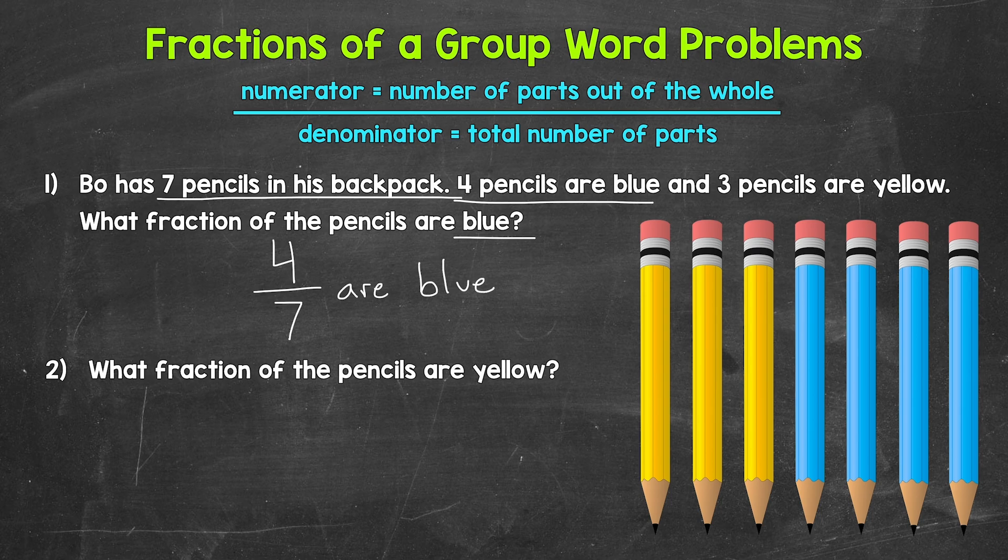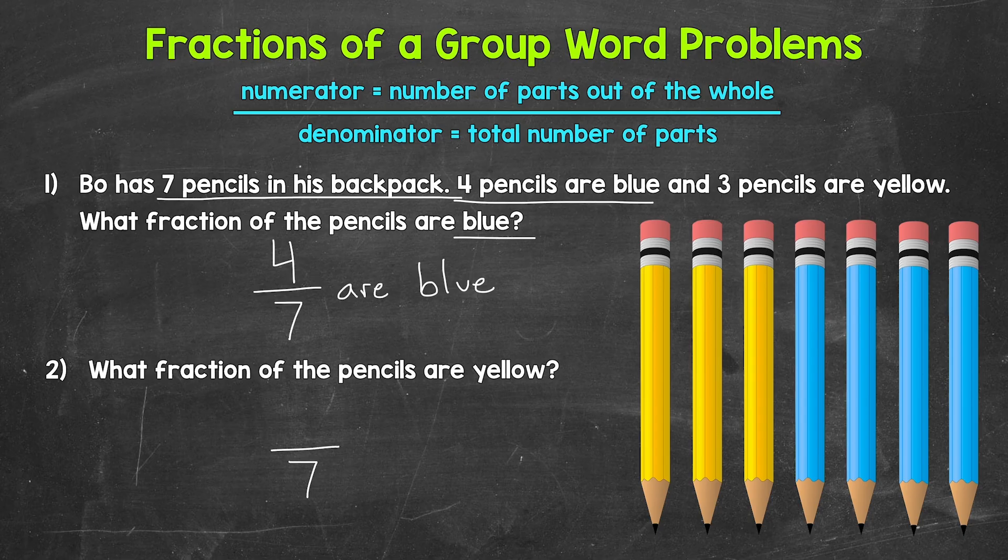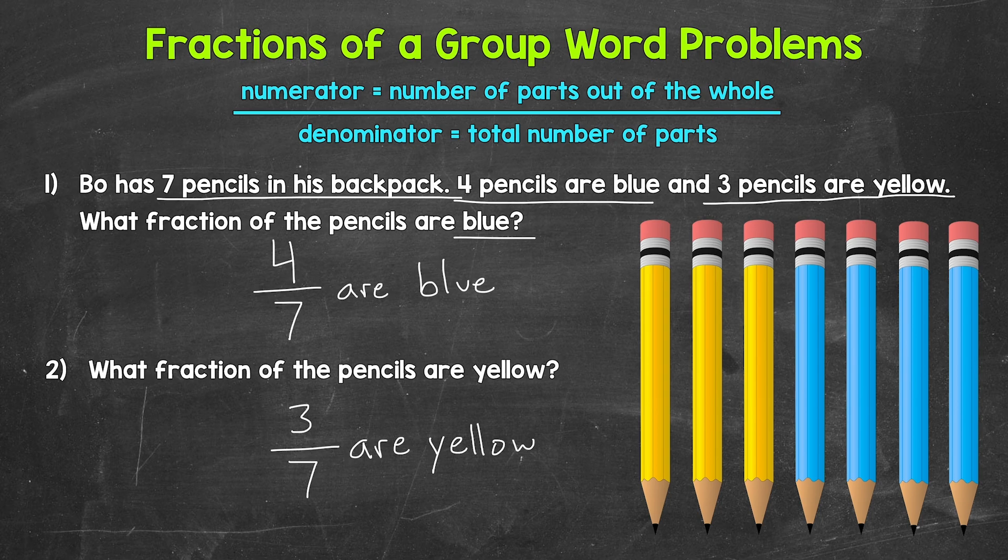Moving on to number two, what fraction of the pencils are yellow? Let's start with the denominator, which is going to be seven again. So the denominator is seven, and now we need the numerator. So the number of yellow pencils. Bo has three pencils that are yellow. So three is our numerator. Three out of the seven pencils are yellow. So our fraction here, three-sevenths. Three-sevenths of the pencils are yellow. Now you'll notice I have a visual of seven pencils off to the right. That's there to help us picture these two word problems. I'll provide visuals for the other examples as well. But our main focus here is going to be working from the word problems.